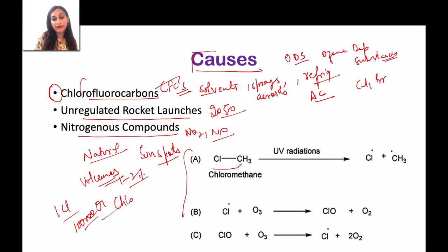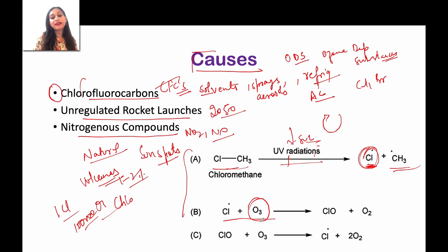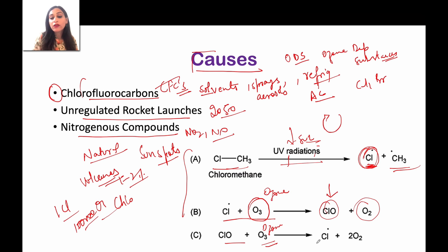What happens here is: chloromethane is broken by UV radiation, so chlorine and methane are separated. If there is ozone thinning, it becomes a cycle and ozone starts to break. Chlorine reacts with ozone in the presence of UV radiation. When it reacts with ozone, you get chlorine monoxide and oxygen. This chlorine monoxide will again react with ozone, and then chlorine is regenerated. So chlorine is repetitive — it forms a cycle, and the ozone depletion continues.